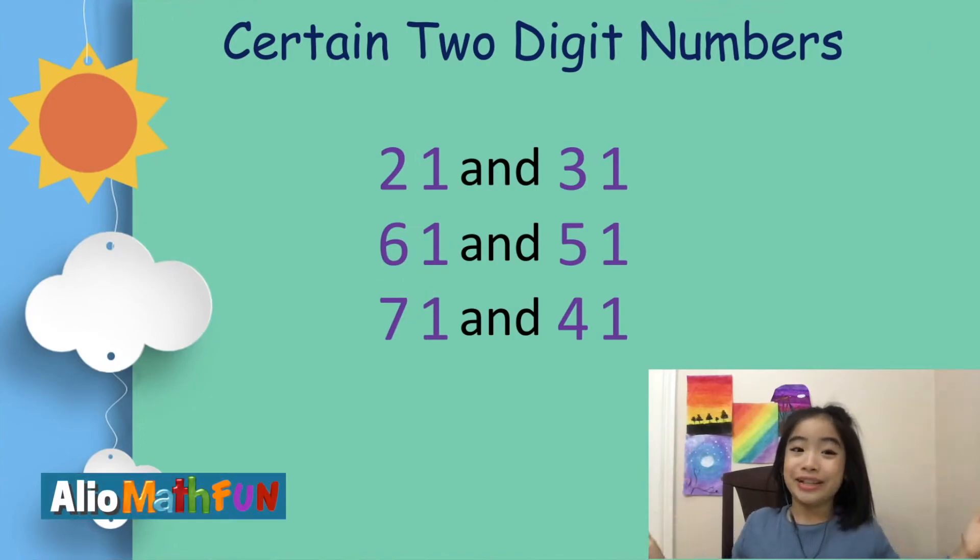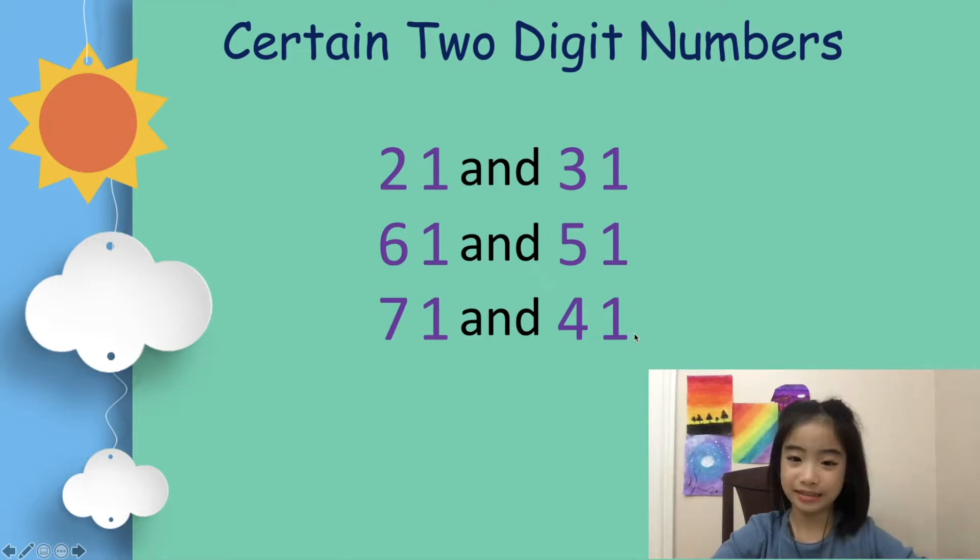This trick works for certain two-digit numbers. The trick works for 21 and 31, 61 and 51, and 71 and 41. Do you spot the pattern? Well, they all end in one. So the trick works for numbers that end in one.